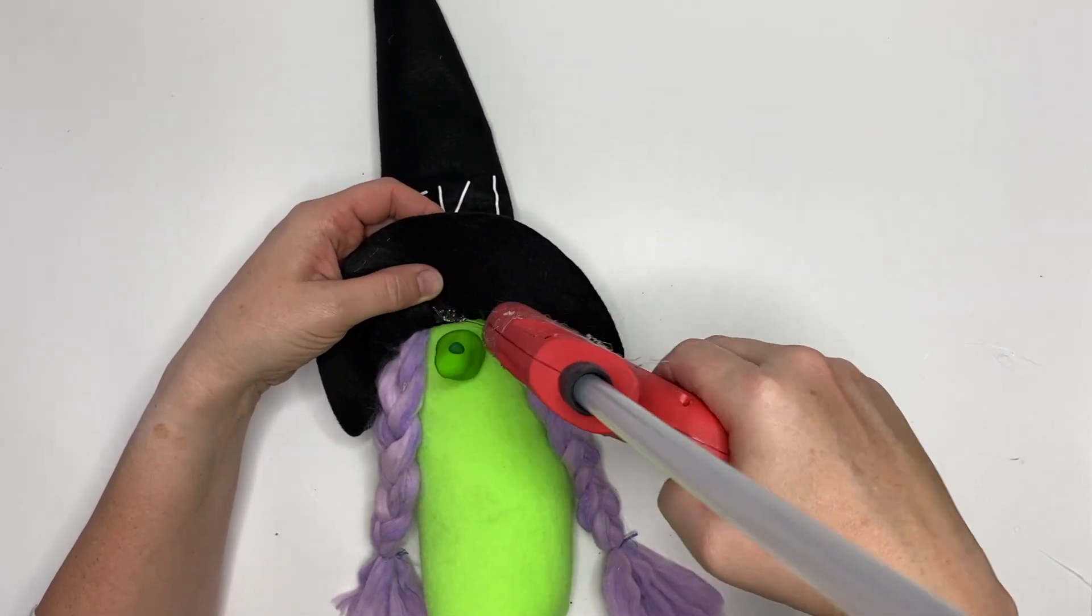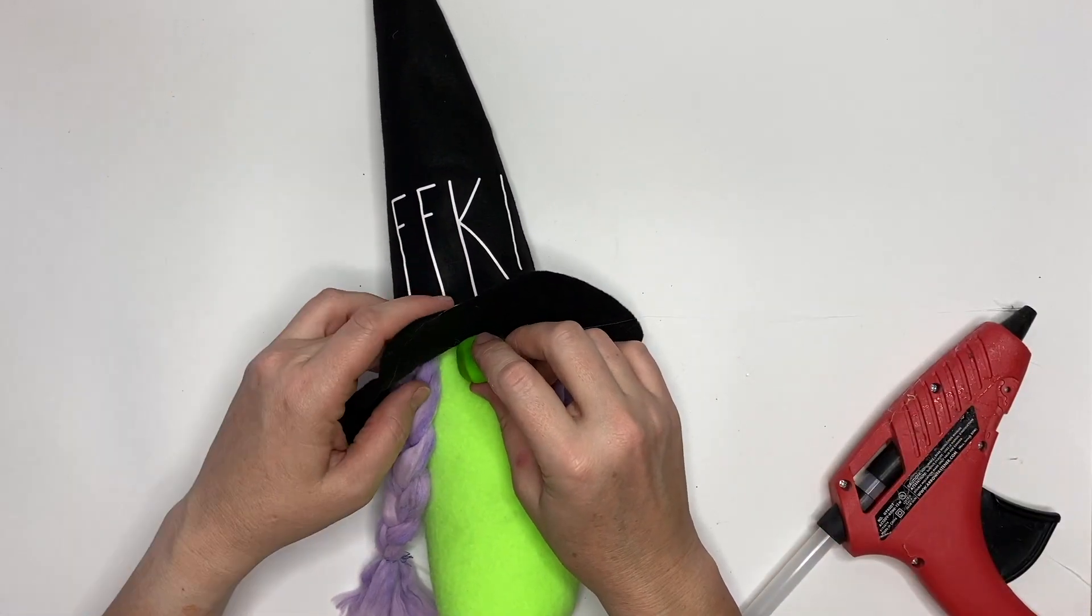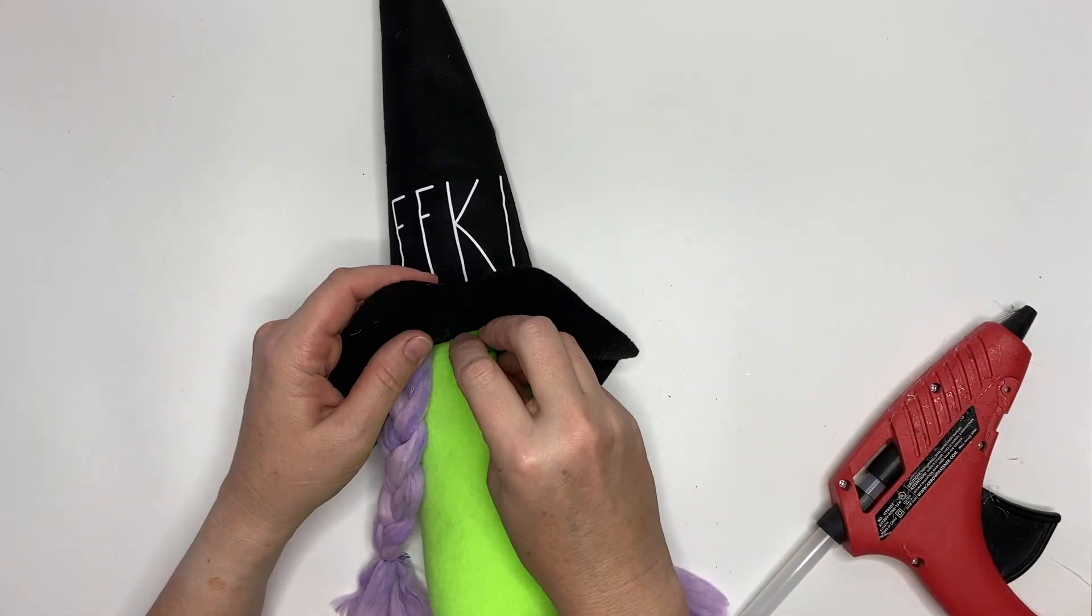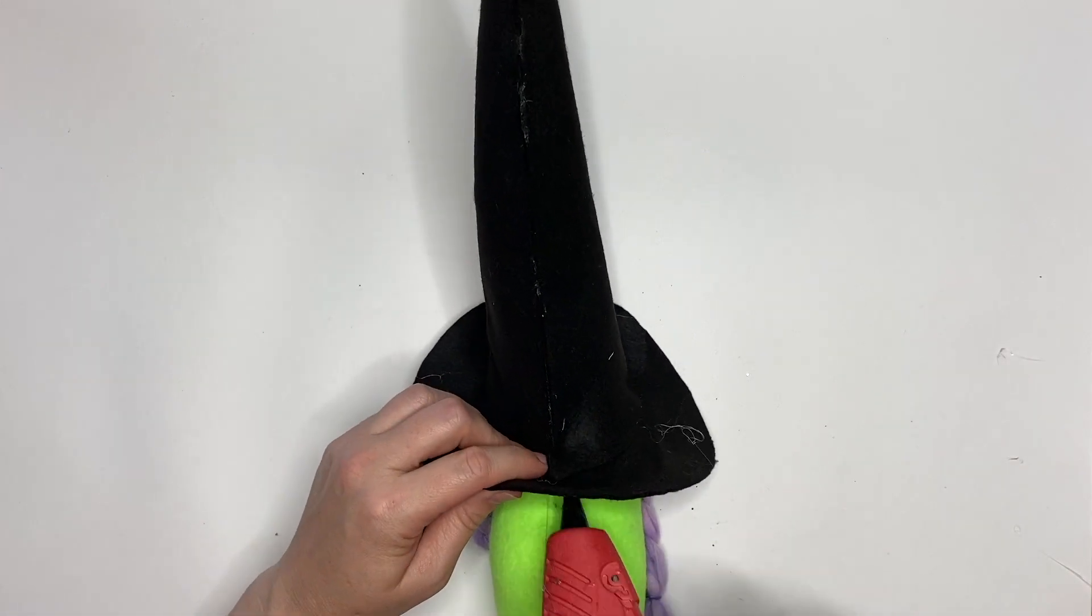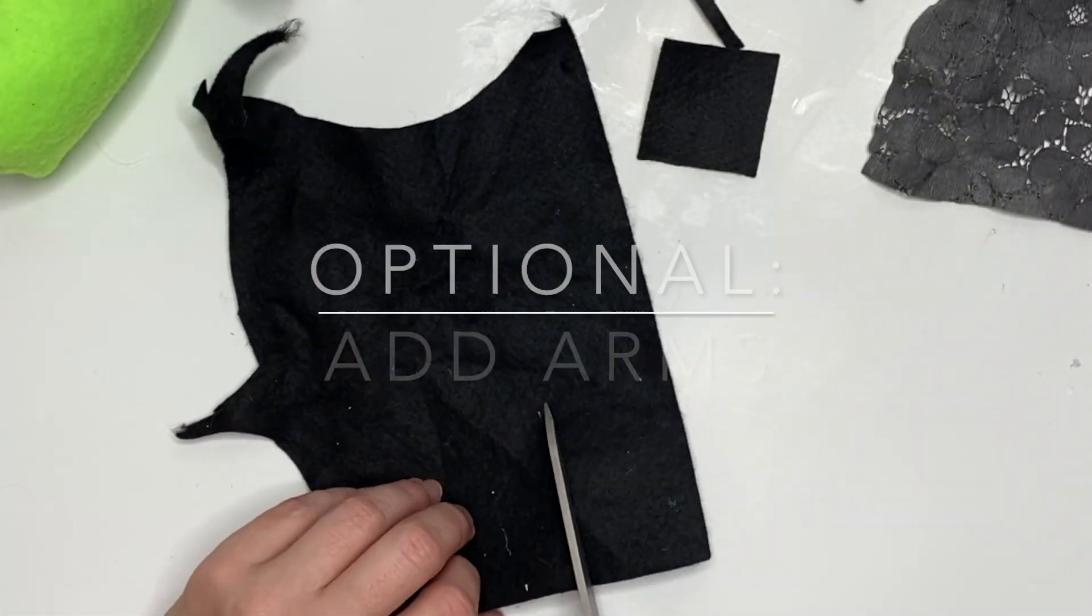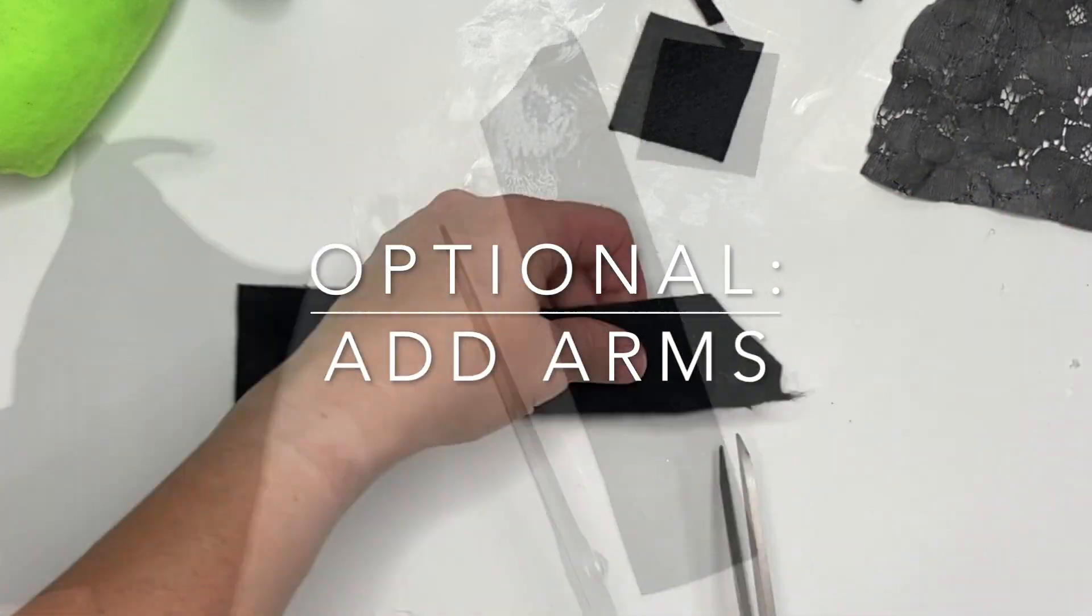We're gonna add a little bit of glue to the brim of the hat and put that right on the nose because I really like when the top of the nose is covered. Then I'm gonna flip it back and yank down the hat. You don't have to do that—I just wanted it tipped up.